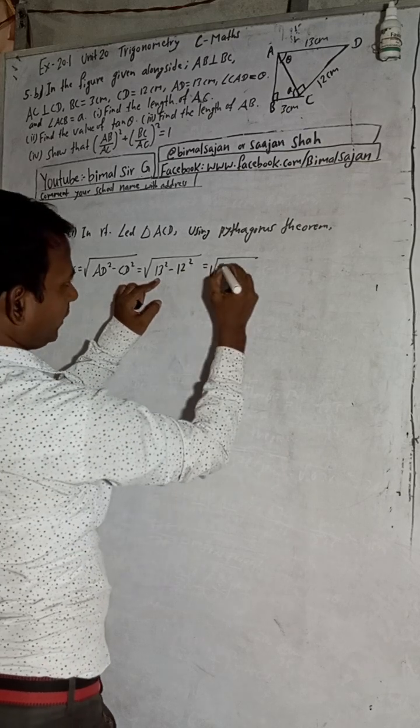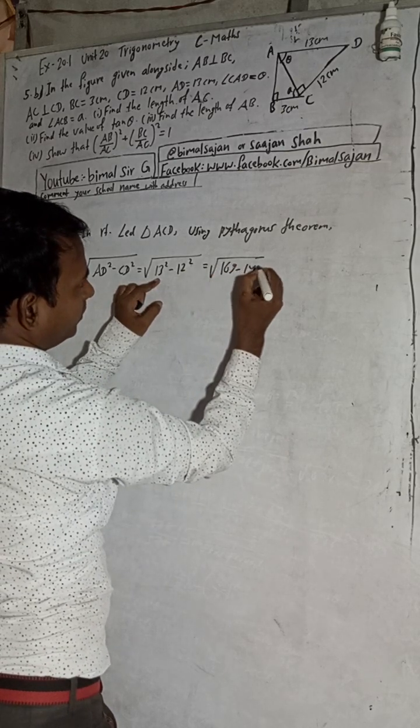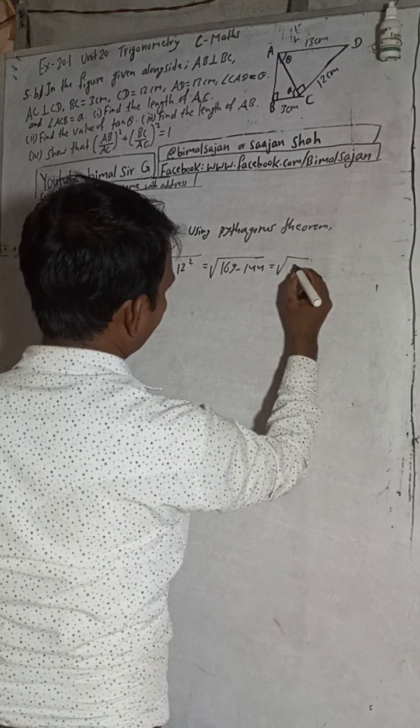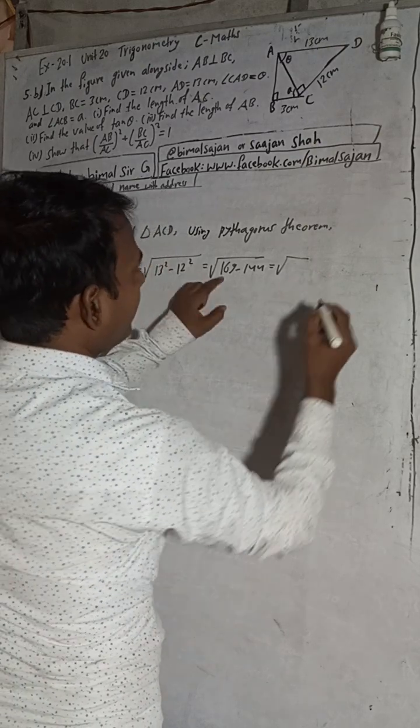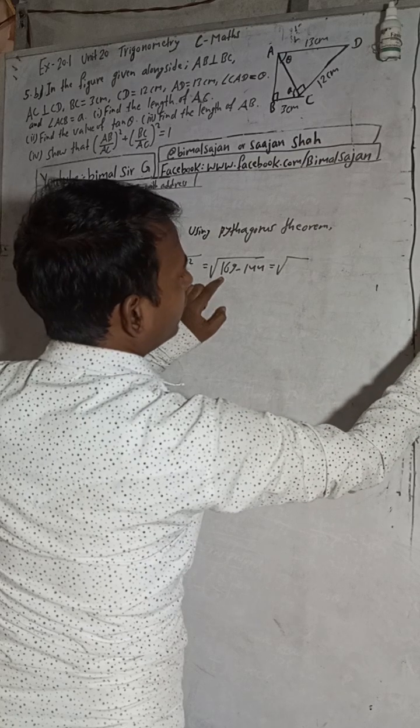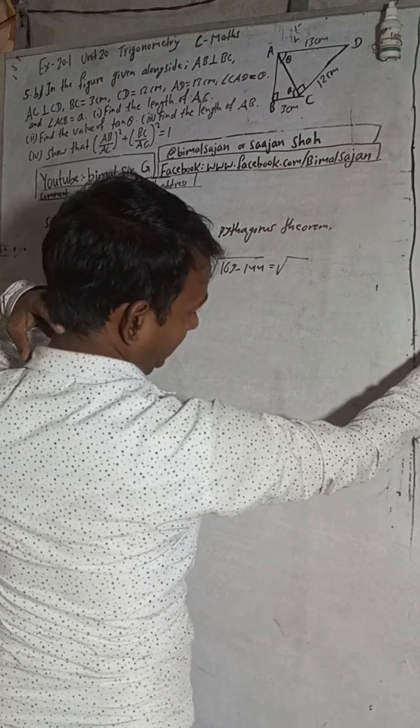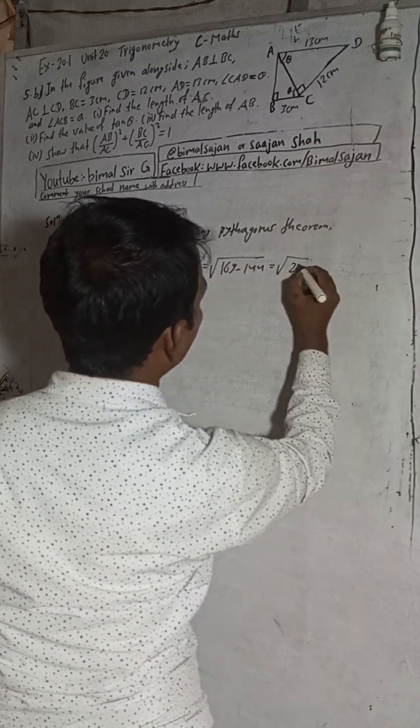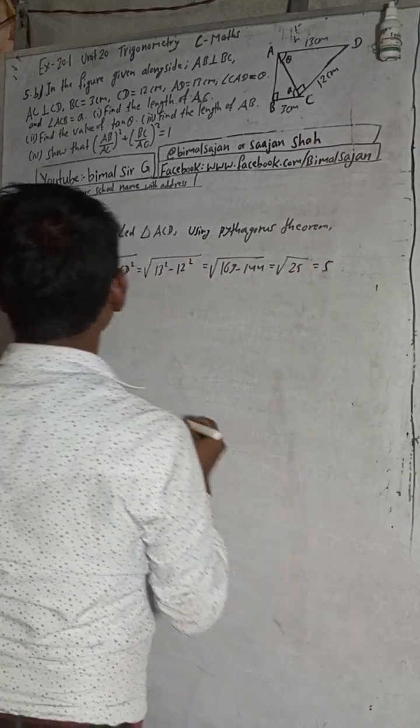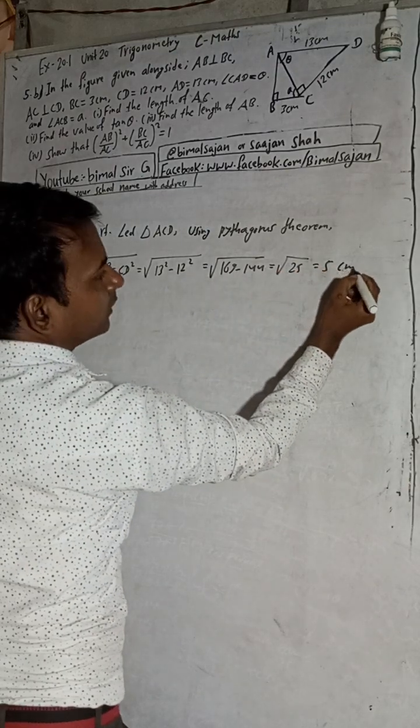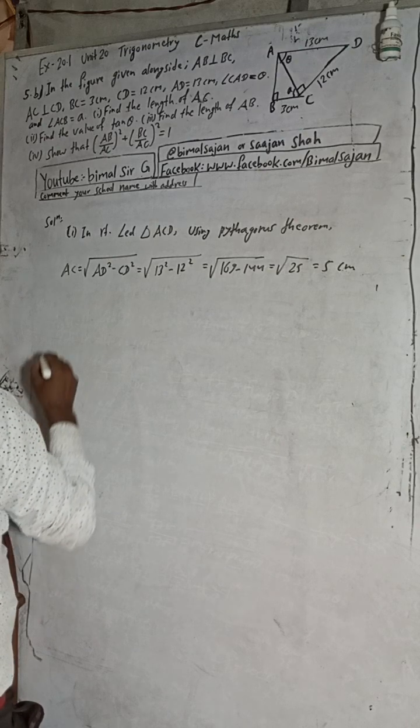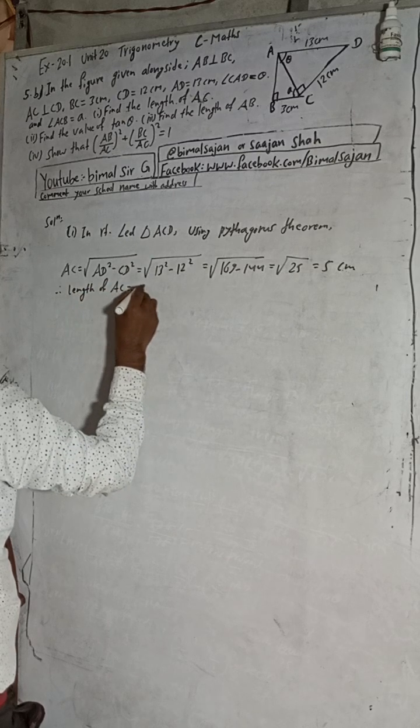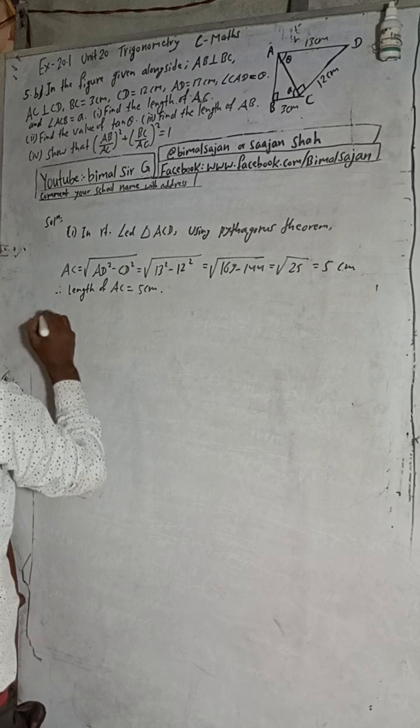This is 13 square which is 169 minus 144, so we get 25. The square root of 25 is 5, so we got AC equals 5cm. Therefore, the length of AC is equal to 5cm. We got the first answer.